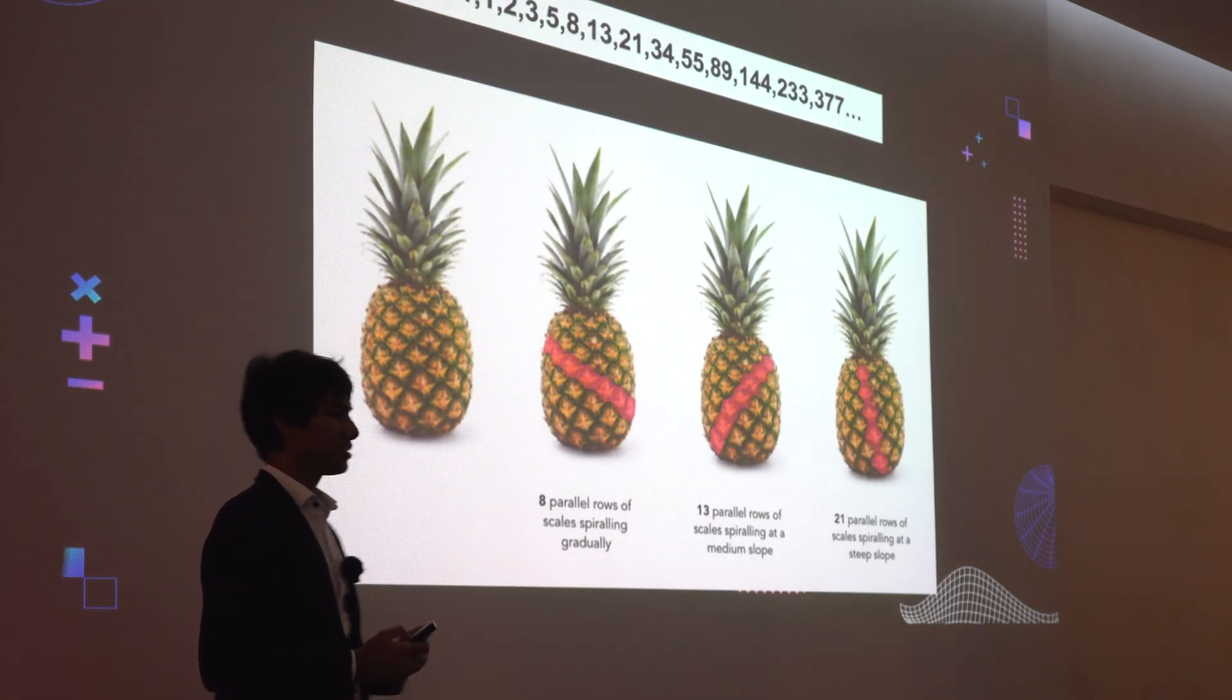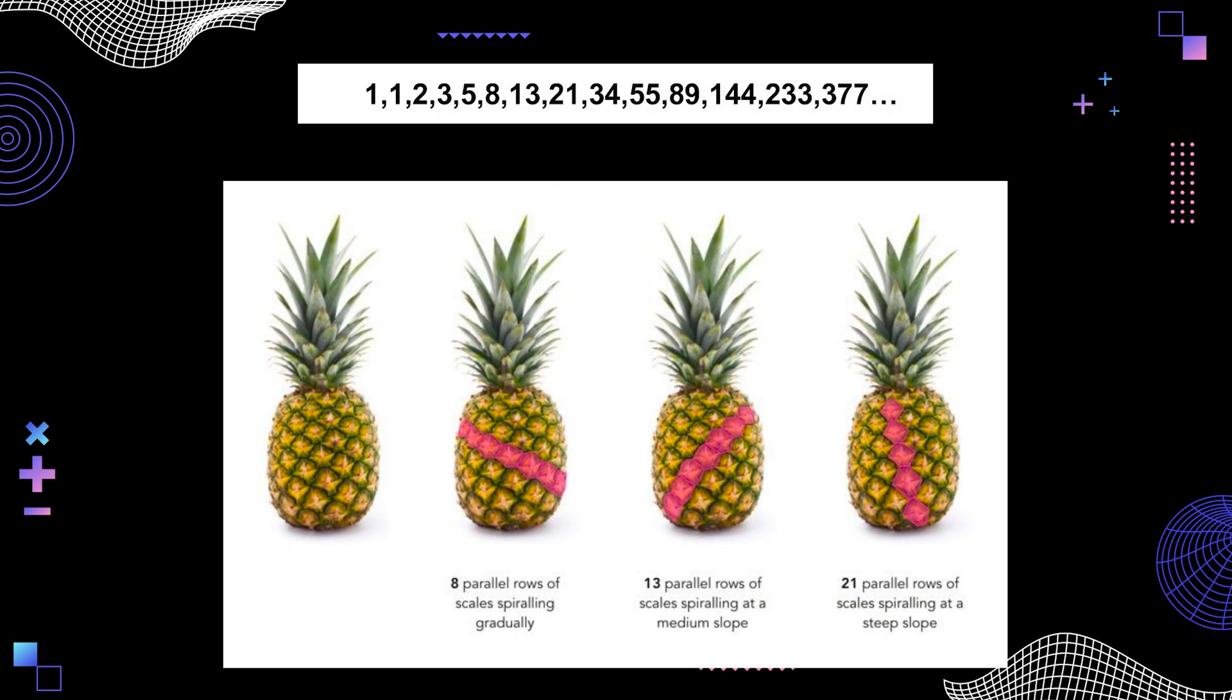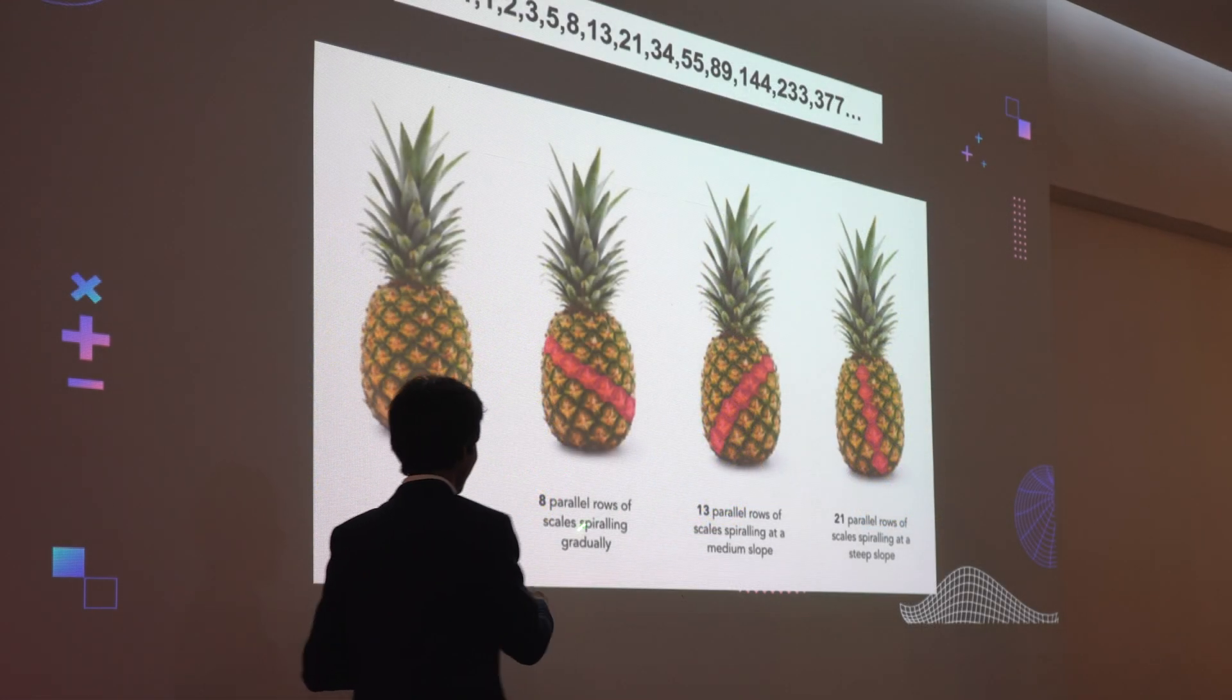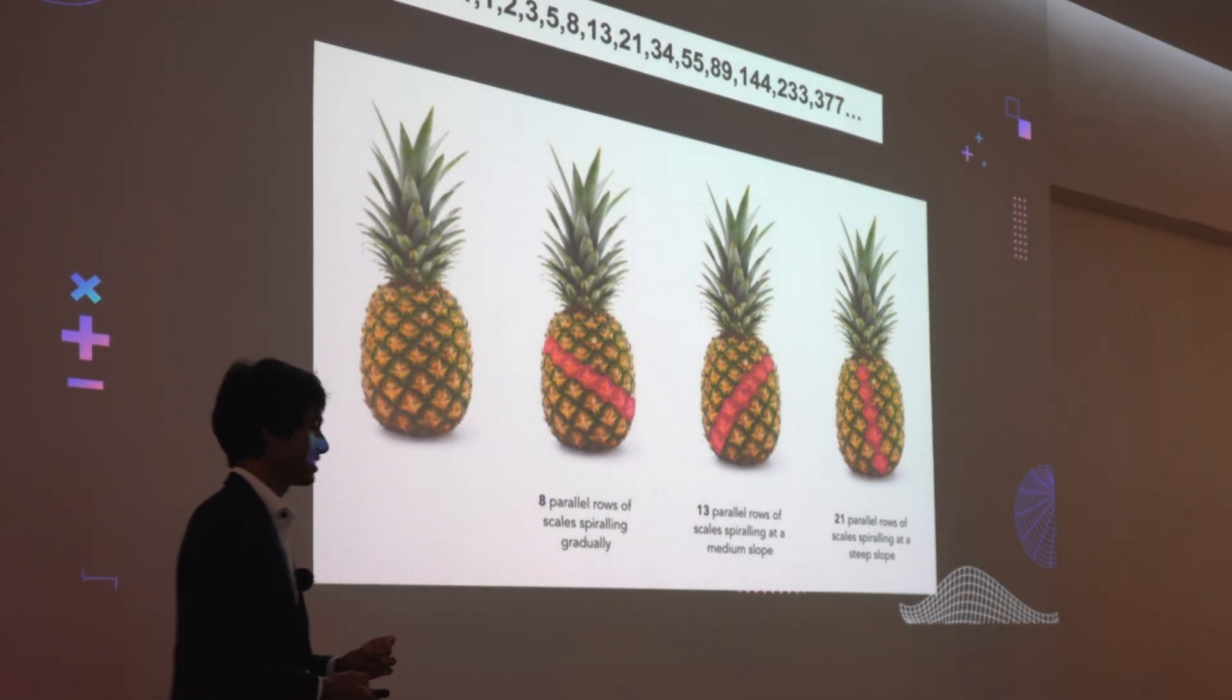So let's dive into some real life applications of these two sequences that I've mentioned right here. This is a pineapple. And yes, the Fibonacci sequences are embedded right into the pineapple. For example, let's say you were to take a pineapple when you get home, and count the number of squares in one complete spiral. I guarantee you that that number would always be a Fibonacci number. And these numbers 8, 13 and 21 are actually Fibonacci numbers.